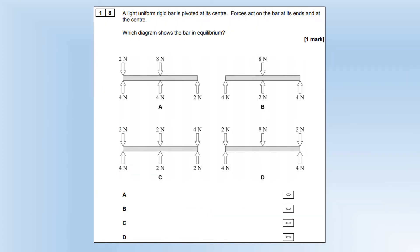A light uniform rigid bar is pivoted at its center. Forces act on the bar at its end and the center. Which diagram shows a bar in equilibrium? The first two that you can eliminate are these ones, because in these diagrams the resultant force is not equal to zero. There is a resultant force upward in B and there's a resultant force downward in D, so they're clearly not in equilibrium.